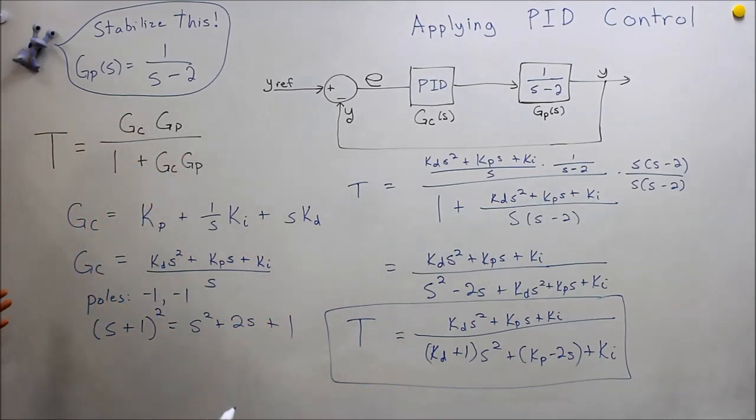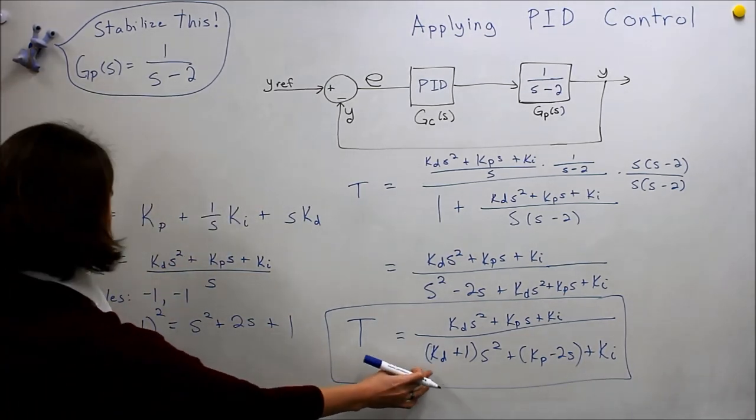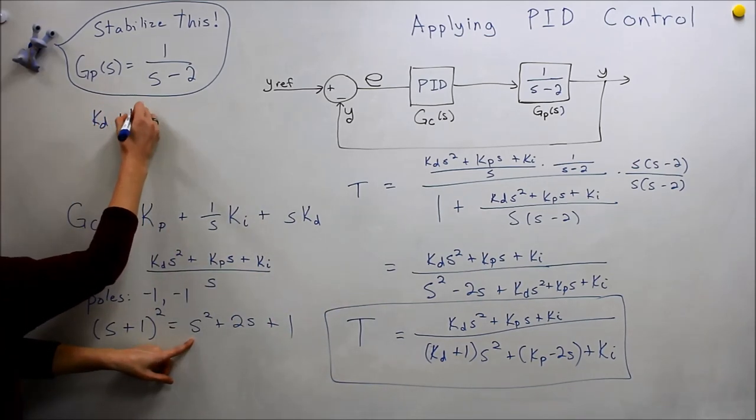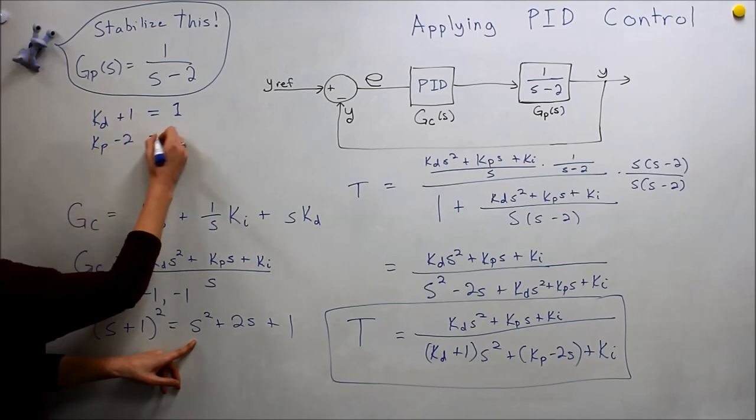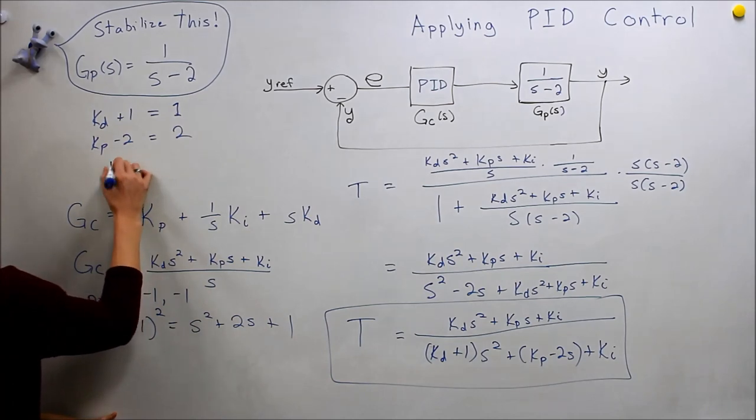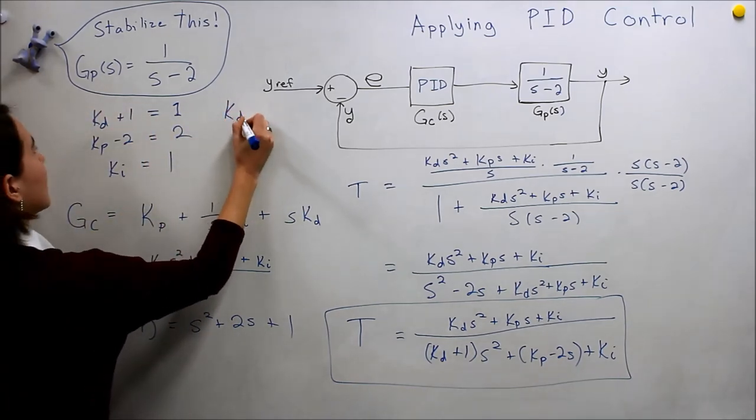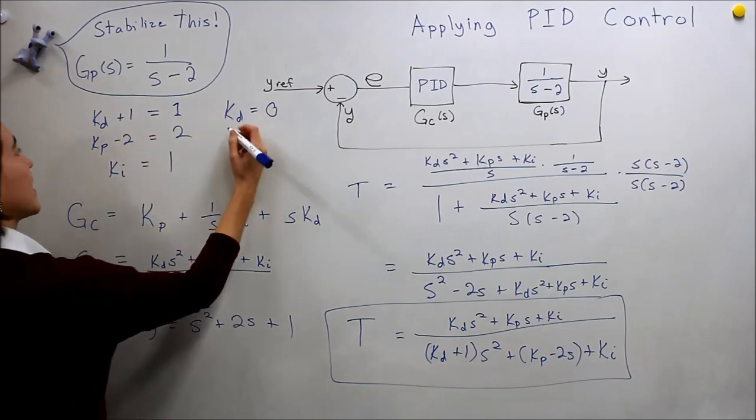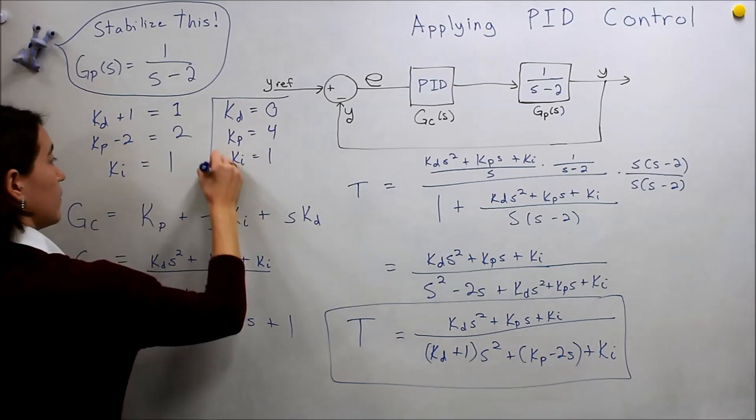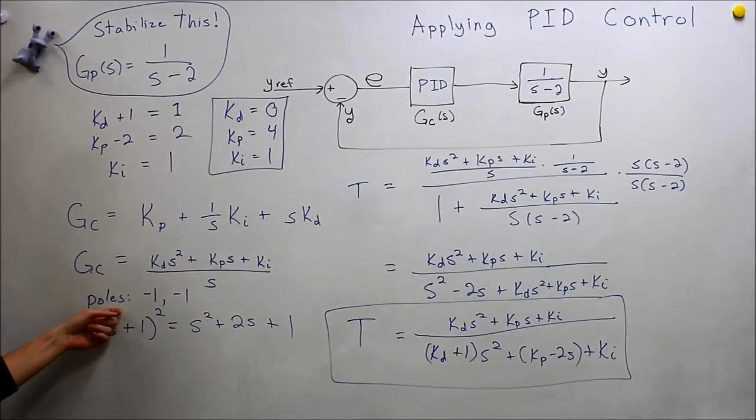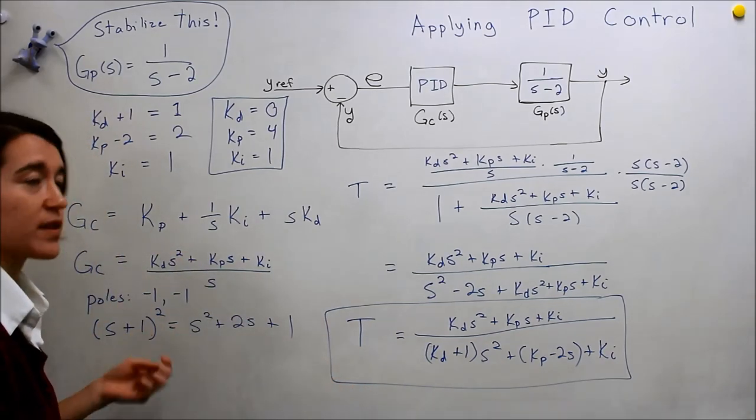And if we multiply that all out, we would get s squared plus 2s plus 1. So all we have to do now, hopefully, to achieve that, is to make these look the same. So not too bad. Let's see if we can do it. All we need to do is make KD plus 1 equal to this coefficient, which is 1, and then we need this KP minus 2 to be equal to 2, and then we need KI to be equal to 1. So if we just do these calculations, we'll see that KD equal to 0, actually, will satisfy this equation, KP equal to positive 4, and then KI equal to 1, will put the two poles at negative 1 and negative 1, which means that our system will be stable.